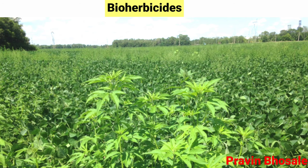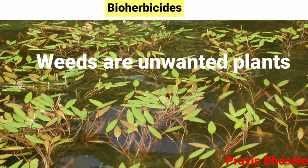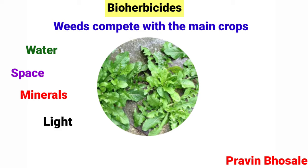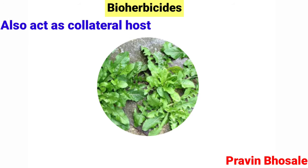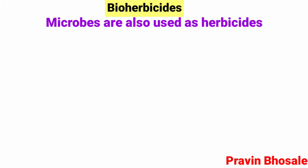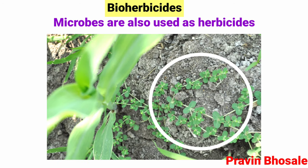Bioherbicides: Weeds are unwanted plants that grow in agricultural fields, ponds, and lakes. Weeds compete with the main crops in the farmland for water, space, minerals, light, and air, and also act as collateral hosts for several pathogens. Microbes are also used as herbicides. Many dicot herbs that grow in cereal fields as weeds can be killed by certain microbes.